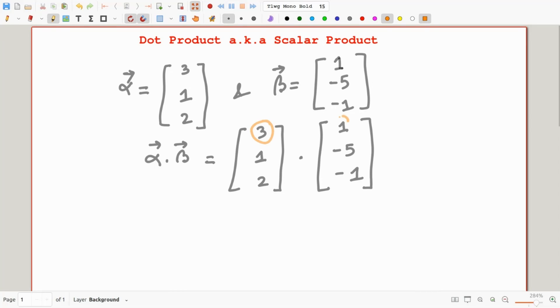The answer is, we are simply going to multiply each component by its opposite number and then add them up. We are going to multiply the first component of alpha, which is 3, to the first component of beta, which is 1. So 3 times 1, then we will add this with the multiplication of the second component of alpha with the second component of beta. So 1 times minus 5, and finally, the third component is 2 times minus 1.